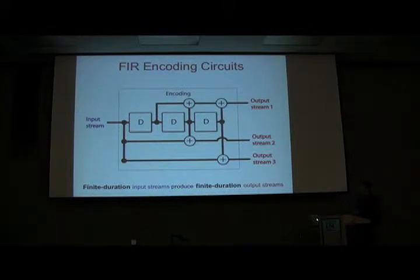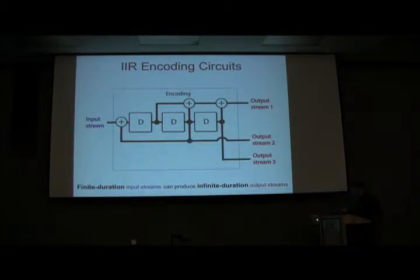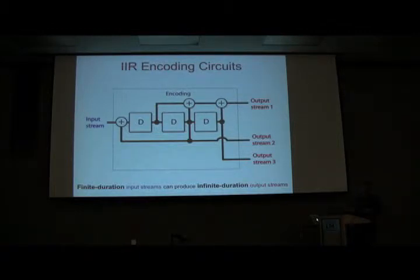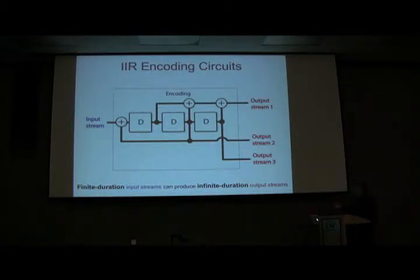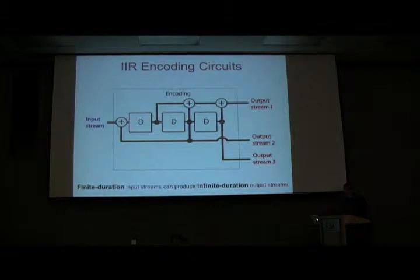If you just have finite impulse response circuits, that limits your power in the classical domain, so there are also infinite impulse response circuits. It's assumed in these models that errors will not occur when you're encoding data — that's an assumption we will make in some of our codes. In an infinite impulse response circuit, a finite duration input stream can lead to an infinite duration output stream, because you take the inputs, copy them, and put them back into the circuit. We use infinite impulse response quantum circuits in some of our circuits, and we'll discuss some of the issues involved with these circuits later on.